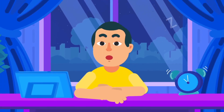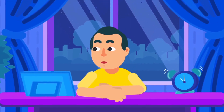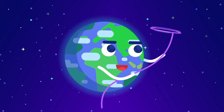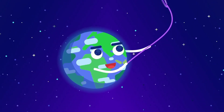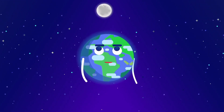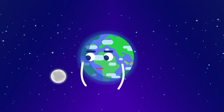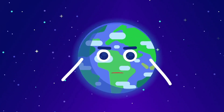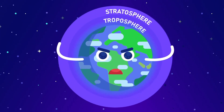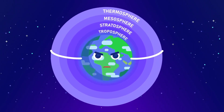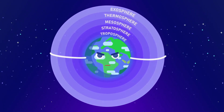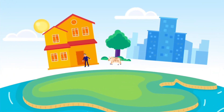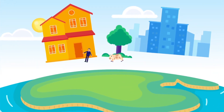Gravity. As we have discussed in our previous video, everything on Earth is affected by its gravitational field. The Earth's gravity is a powerful force that keeps our moon revolving around the Earth and keeps the atmosphere from escaping so we can breathe. As a result of that force, everything on Earth is subject to gravitational acceleration.